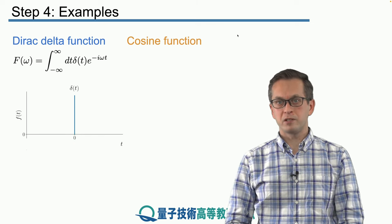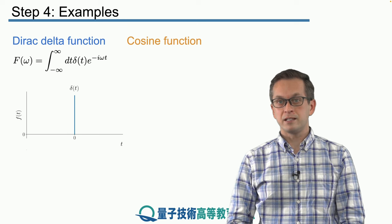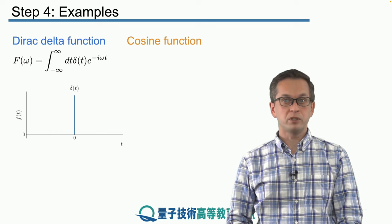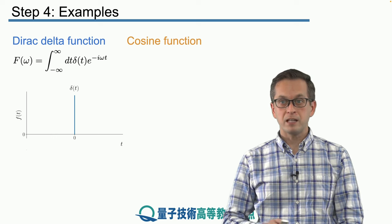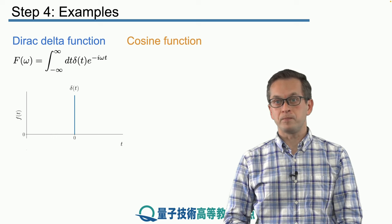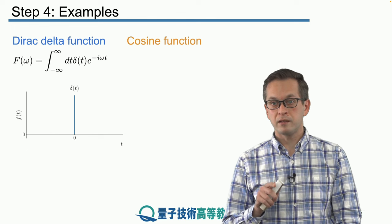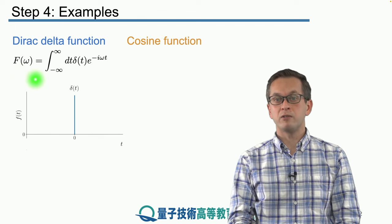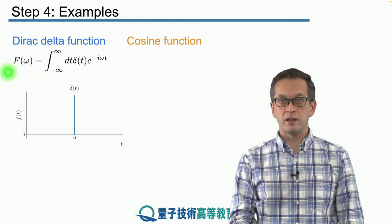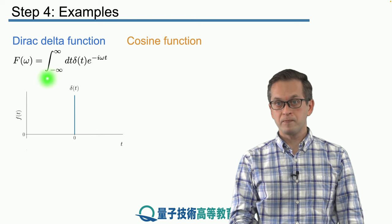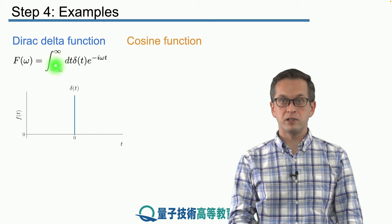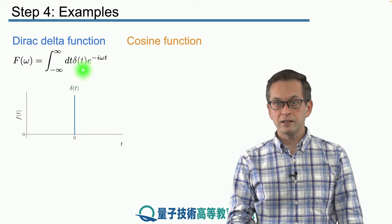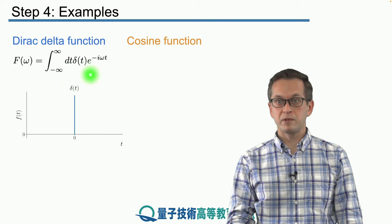And again, one of the properties of the Dirac delta function is that if you take an integral of Dirac delta function multiplied by any function, then that function picks up non-zero values only at the place where the delta function is non-zero. So when we write down our forward Fourier transform capital F of omega as this integral from minus infinity to infinity over all time dt, delta t, the Dirac delta function times this exponential,